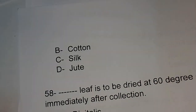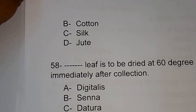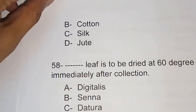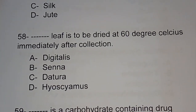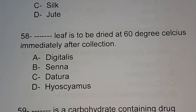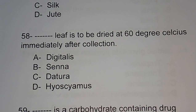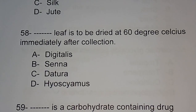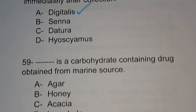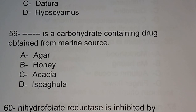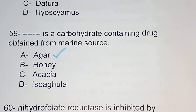Question number 58: which leaf is to be dried at 60°C immediately after collection? Options are digitalis, senna, datura, hyoscyamus. Digitalis is the correct answer. Question number 59: which is a carbohydrate-containing drug obtained from marine sources? Options are agar, honey, acacia, ispaghula. Agar is the correct answer.